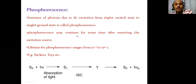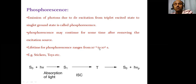Phosphorescence may continue for some time after the removal of the excitation source. The lifetime for phosphorescence ranges from 10⁻⁴ to 10⁴ seconds. An example of phosphorescence is glow-in-the-dark stickers and toys.